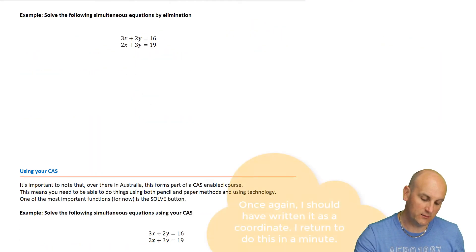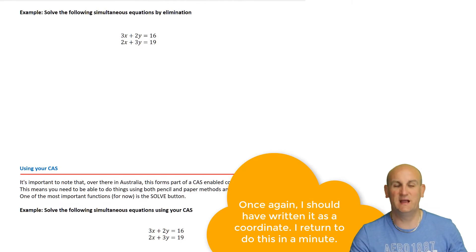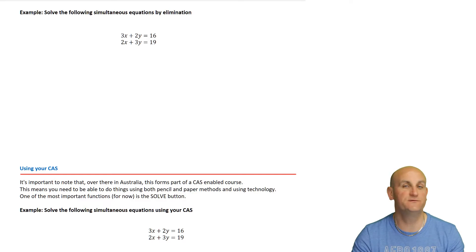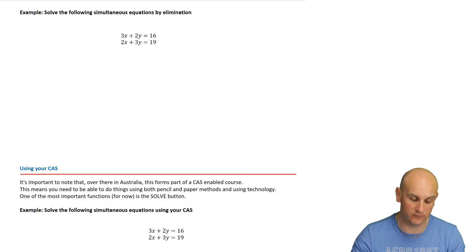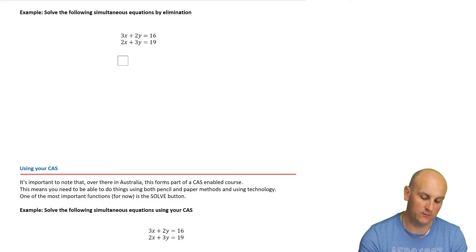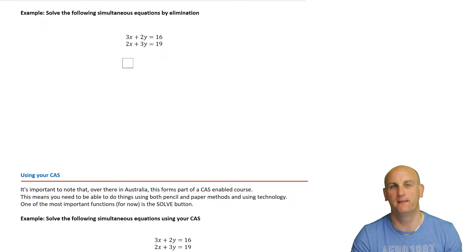Another example: solve the following simultaneous equations by elimination. The first check is whether the coefficients of my pronumerals are the same for x or y. I've got a 3 and a 2 for x, and a 2 and a 3 for y - neither pair matches. So I need some algebraic manipulation.